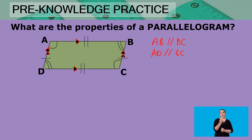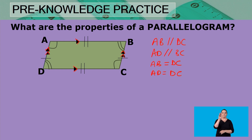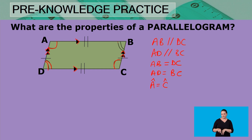There are also two pairs of opposite sides that are equal. AB is equal to DC, and AD is equal to BC. What about the opposite angles? Because this is a parallelogram, we know that the opposite angles are equal. So angle A equals angle C, and angle D equals angle B.